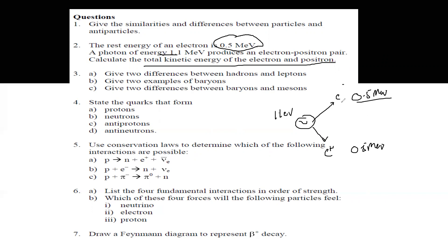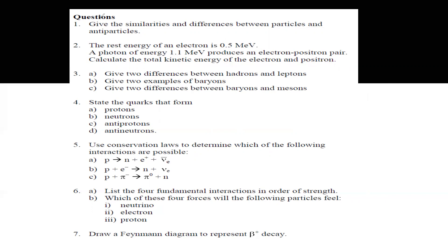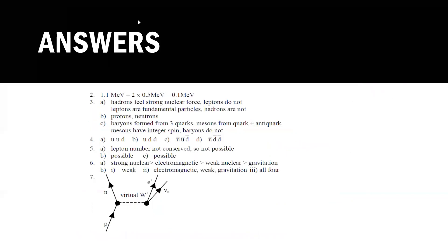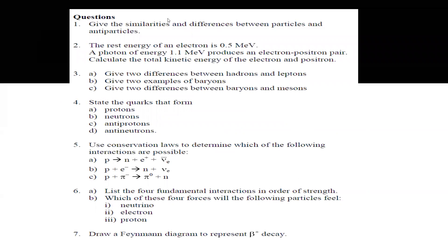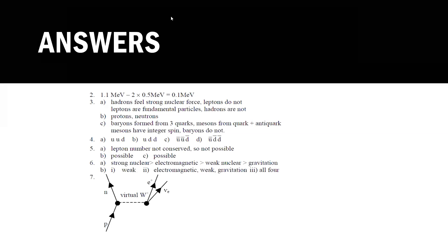To find the total kinetic energy: total energy of the photon minus the energy needed to produce the electron-positron pair — that is 1.1 minus (0.5 + 0.5) — gives 0.1 MeV of kinetic energy. For differences between hadrons and leptons: hadrons experience the strong nuclear force whereas leptons do not; leptons are fundamental particles whereas hadrons are not.